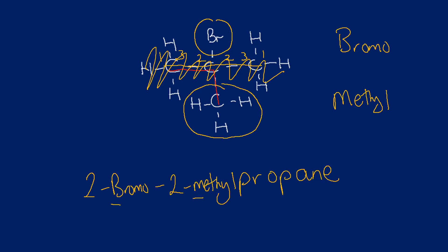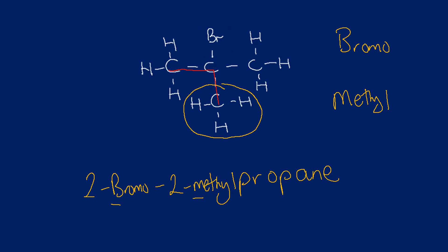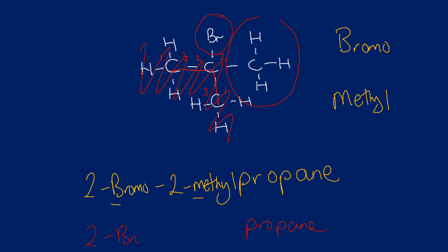If we name it down the red chain instead, going one, two, three and in reverse one, two, three, the chain is still propane. We still have a CH₃ methyl group and a bromo group, both attached to carbon two. Using alphabetical order again: 2-bromo-2-methylpropane — the same name either way.